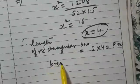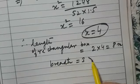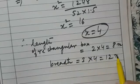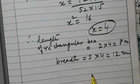What will be the breadth? Breadth is 3x, that is 3 × 4 = 12 meters.